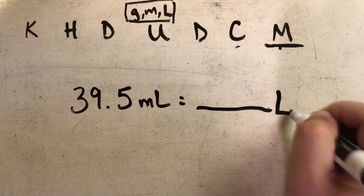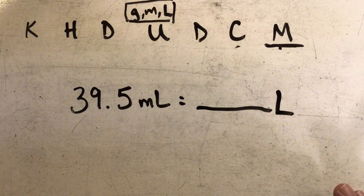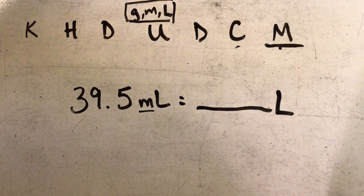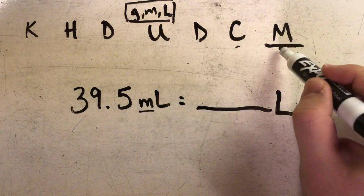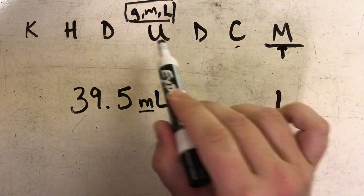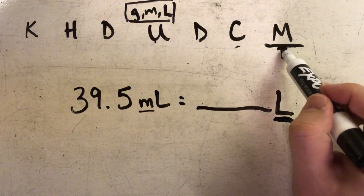So again, I need to find where I start. In this case, it's milli, so my M, and that's where I'm going to begin. And I'm trying to get to liters, which is under my U and my basic unit, so I'm going to move my decimal.